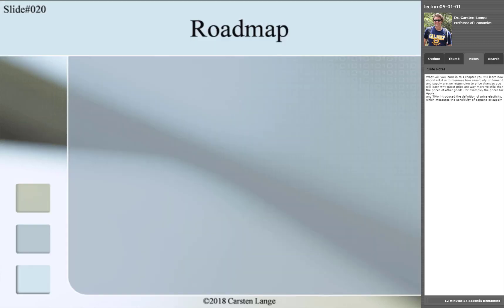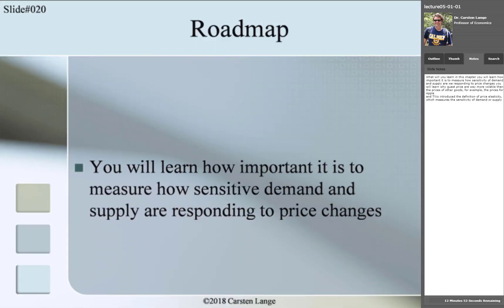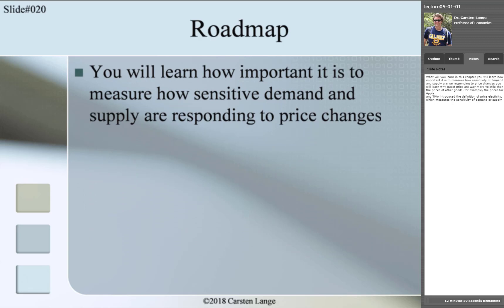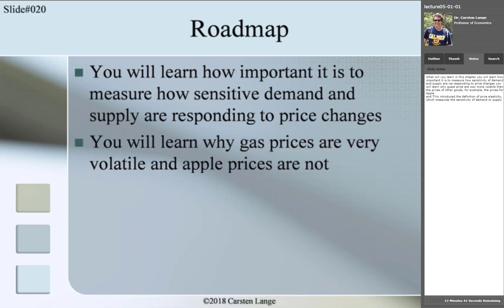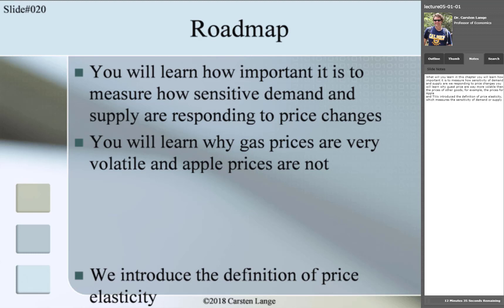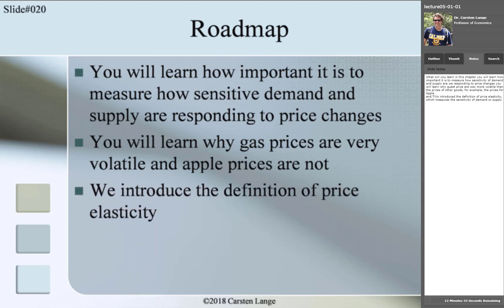What will you learn in this chapter? You will learn how important it is to measure how sensitive demand and supply are in responding to price changes. You will learn why gas prices are way more volatile than the prices of other goods, for example, the prices for apples. And we will introduce the definition of price elasticity, which measures the sensitivity of demand or supply.